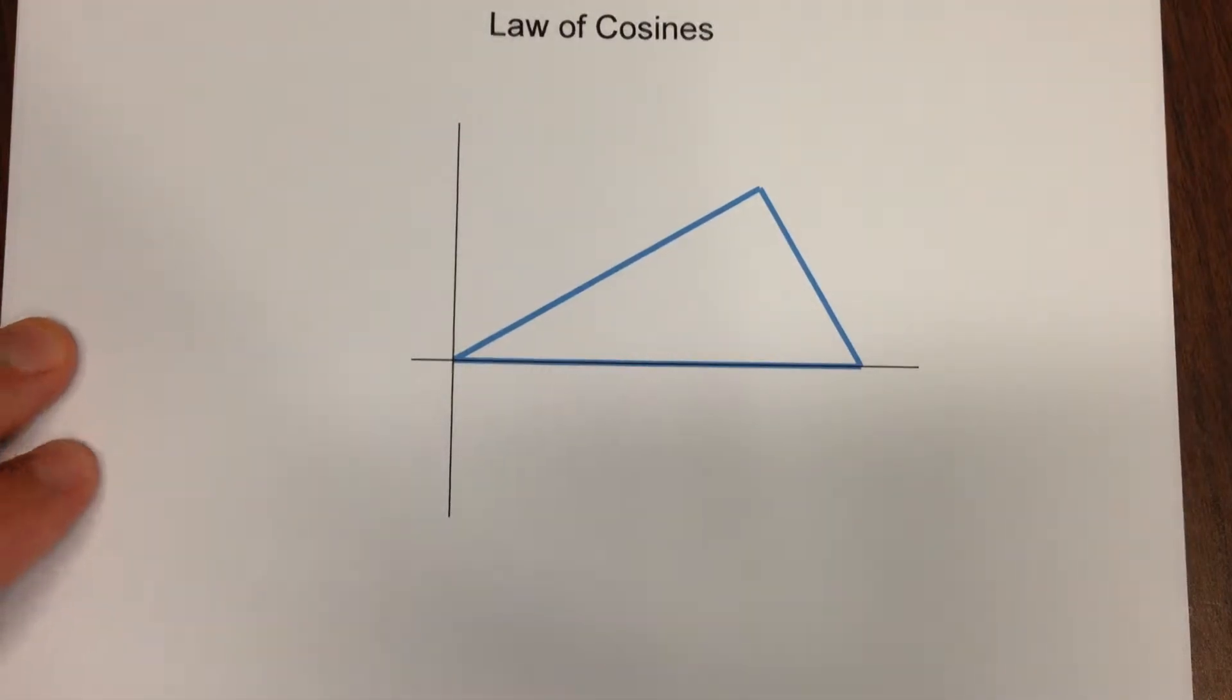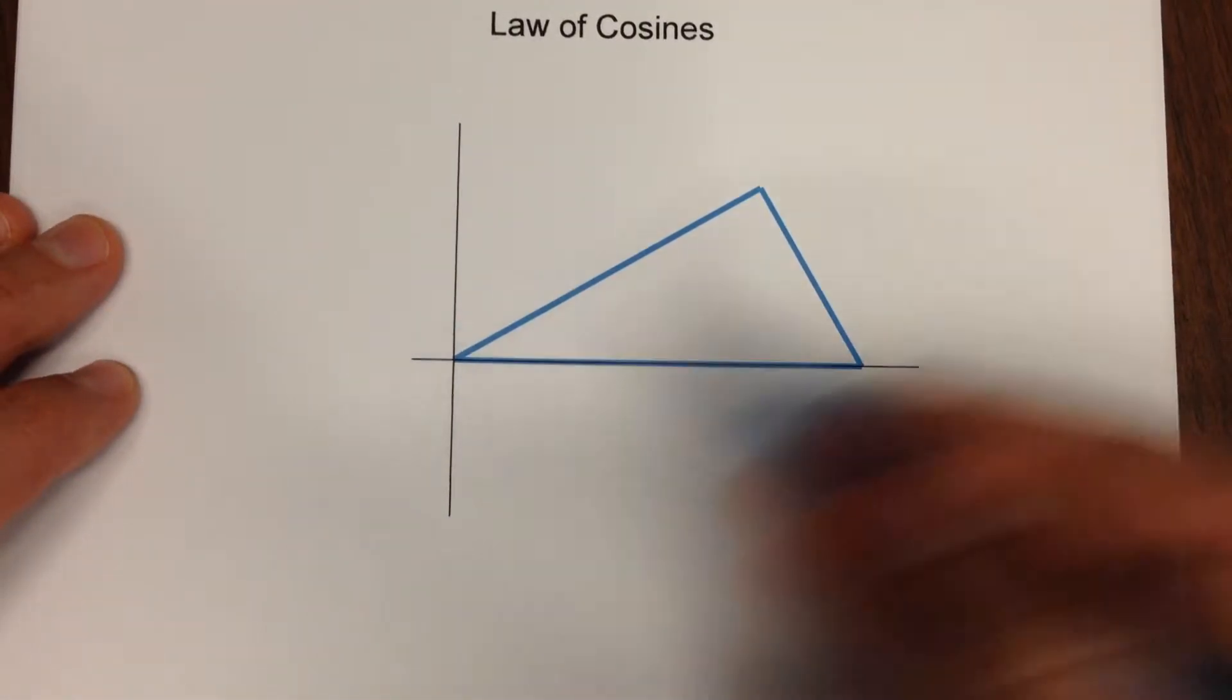Let's have a look at why the law of cosines is true. So we're going to take a triangle.